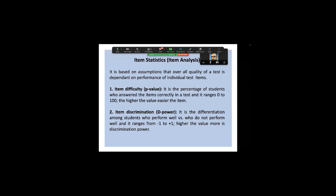The item difficulty p-value is the percentage of students who answered the item correctly. Item discrimination is the differentiation between good-performing versus poorly-performing students, ranging from minus one to plus one. The p-value ranges from zero to one hundred percent, or expressed as a decimal.